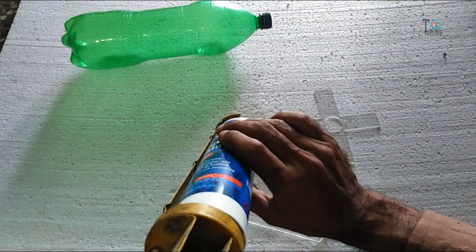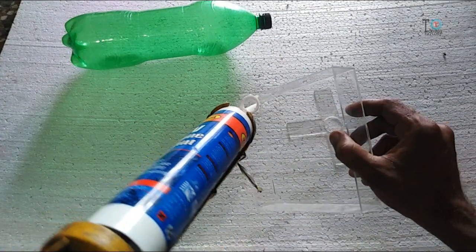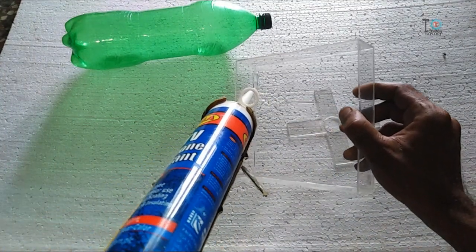Now paste the transparent silicone on all the corners of the part so that water leakage will be prevented.